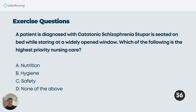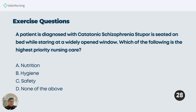This question is an actual NCLEX and also a previous PNLE question. A patient is diagnosed with catatonic schizophrenia stupor, seated on a bed while staring at a widely opened window. Which of the following is the highest priority nursing care? The patient has catatonia — meaning they are rigid and not moving.